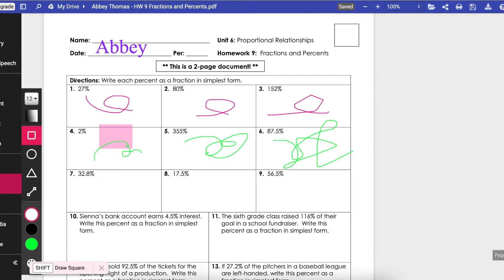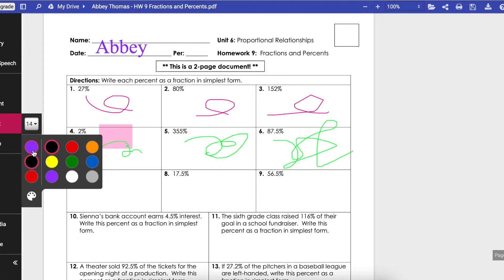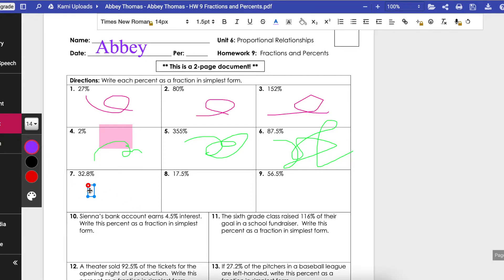From here we can add text boxes, we can choose the font size, we can choose our color. So anywhere that you want a text box just click and then you can start typing.